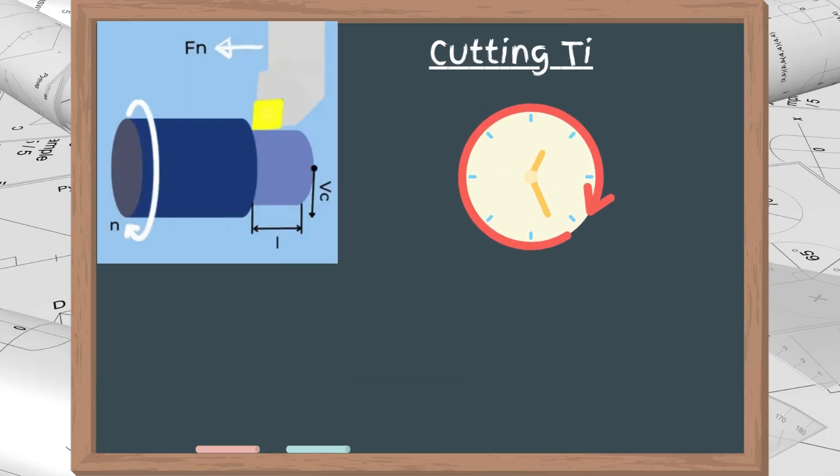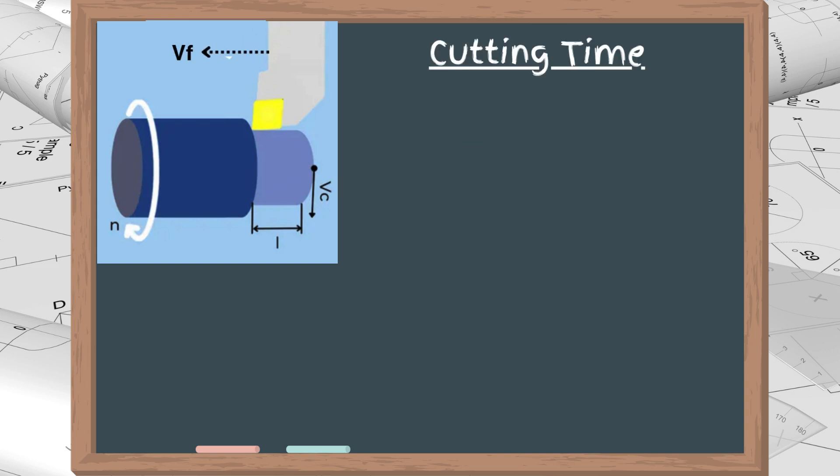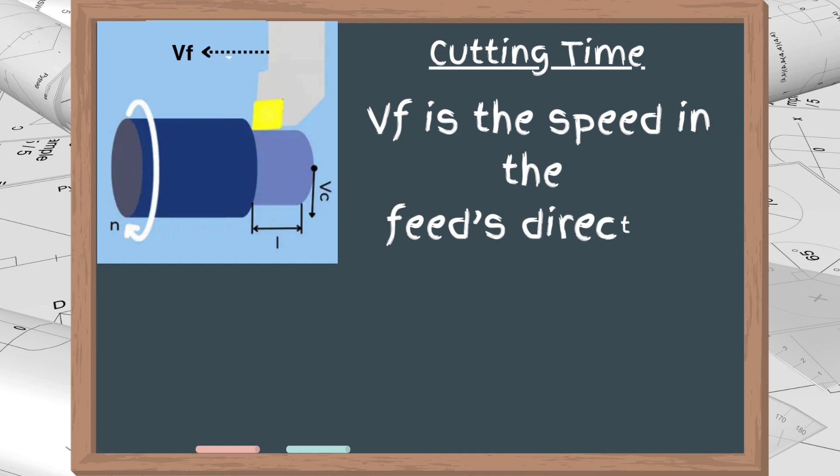Next, we will look at the formula for the machining time of one turning pass. Since the feed for turning is expressed in distance per one full spindle rotation, the linear speed in the feed direction, Vf, is the product of the feed rate and the spindle rotation speed. Vf equals n times F, and the cutting time equals the length divided by Vf.